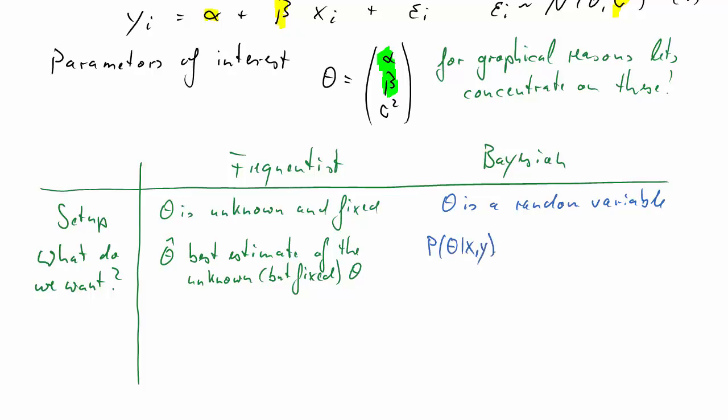A Bayesian, however, is after a distribution. We'll call it a posterior distribution, a distribution for theta conditional on information contained in the data X and Y. So X and Y, this is our data. We want a distribution of theta.